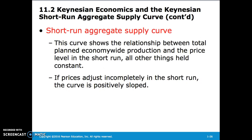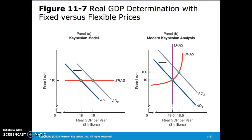The short-run aggregate supply curve shows the relationship between total planned economy-wide production and the price level in the short run, all other things held constant. If prices adjust incompletely in the short run, the curve is positively sloped. In panel A, we see the traditional Keynesian analysis with the completely flat short-run aggregate supply curve. In panel B, we see modern analysis where the price level shifts up some, but not all the way to equilibrium with the long-run aggregate supply curve.